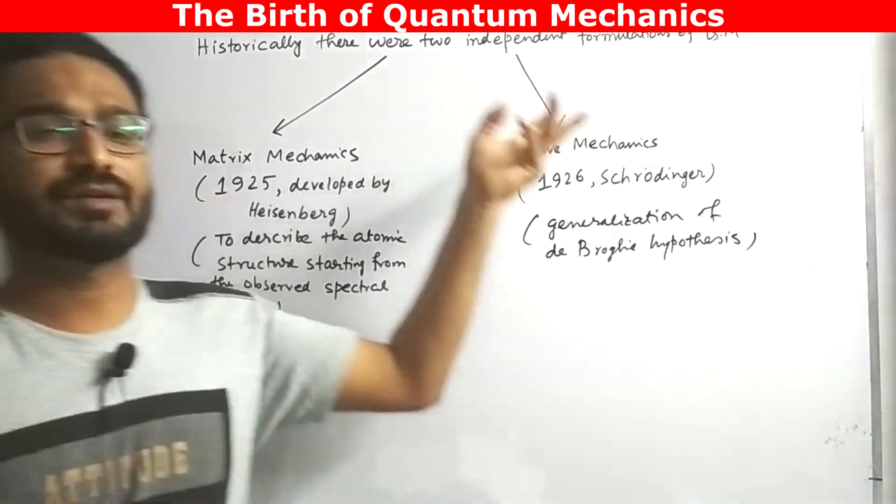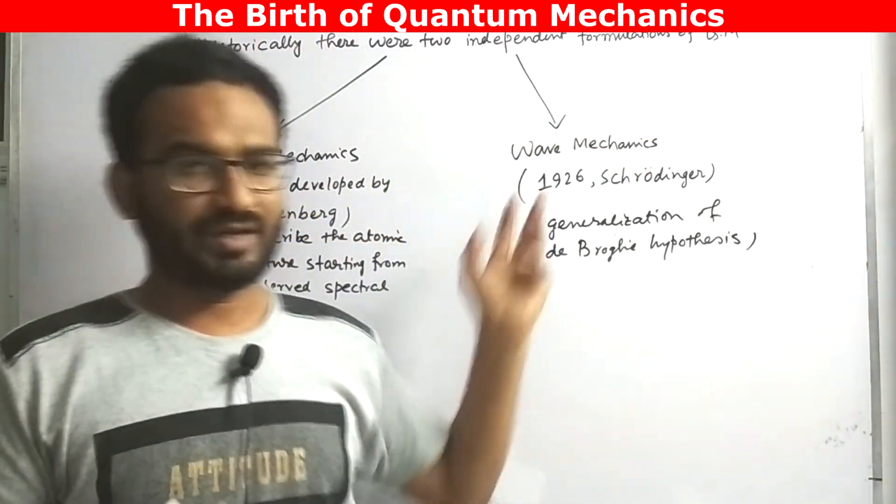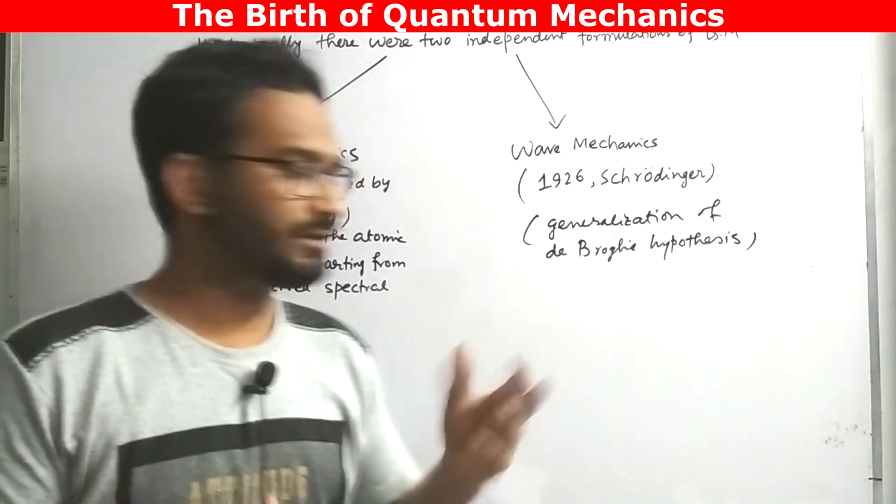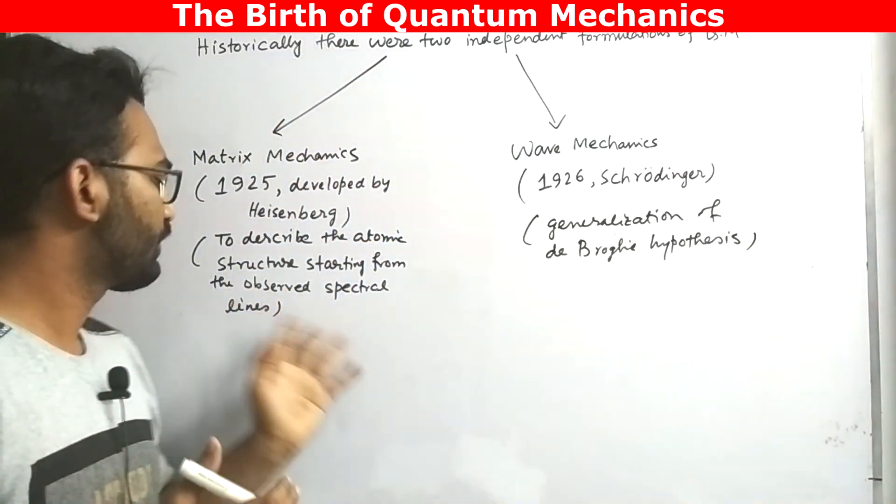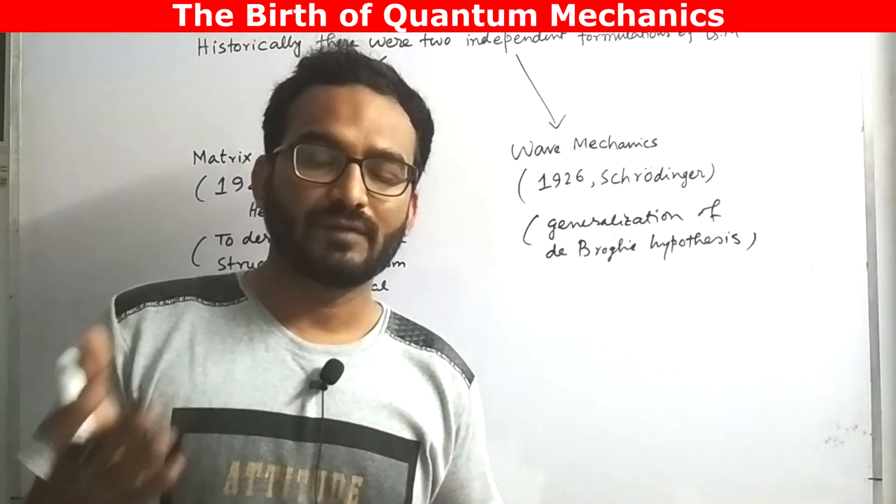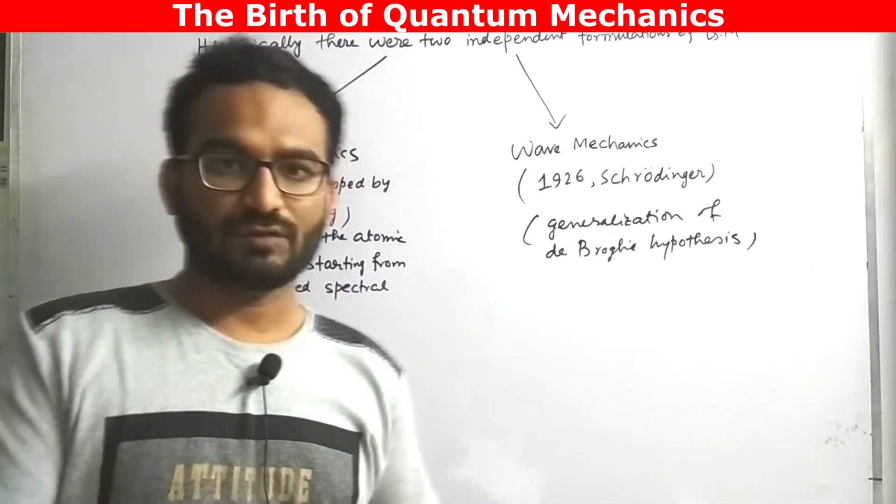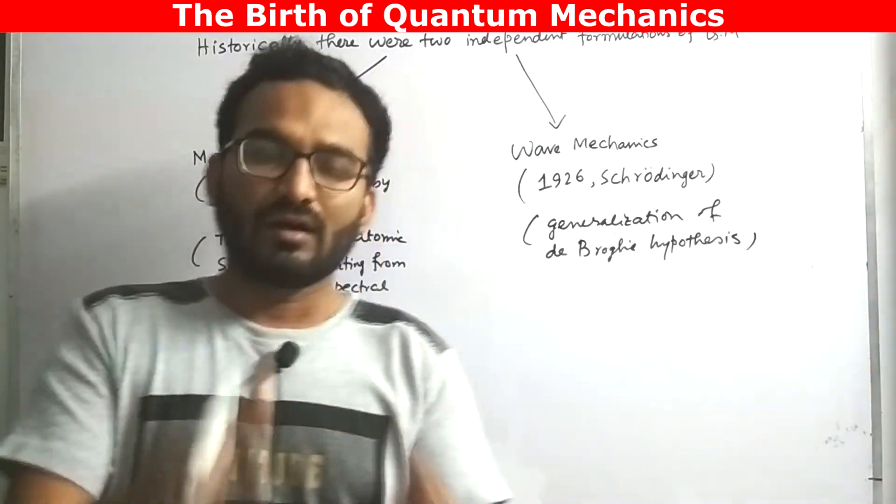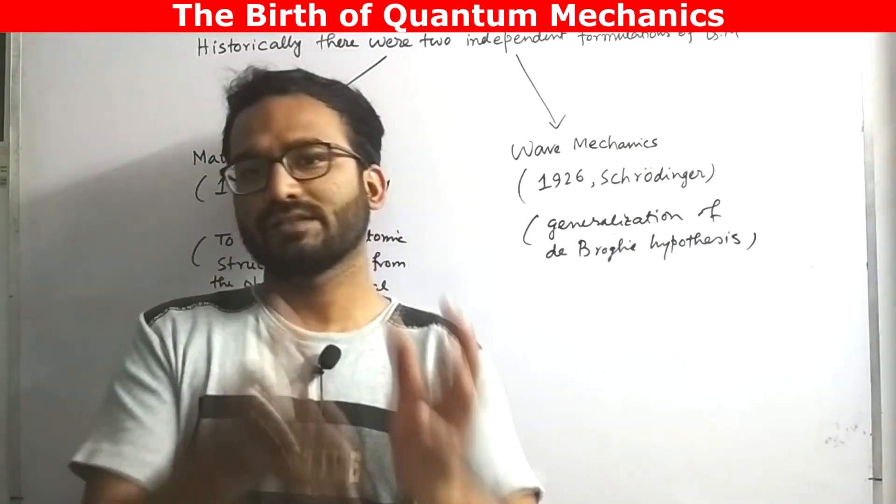Historically there were two independent formulations of quantum mechanics. The first one is matrix mechanics and the second one is wave mechanics. Matrix mechanics was developed by Heisenberg in the year 1925. Heisenberg discovered this method to describe the atomic structure starting from the observed spectral lines. Expressing the physical quantities like energy, position, momentum, angular momenta, etc., in terms of matrices, Heisenberg tried to formulate eigenvalue problems. And from the Hamiltonian formulation, by the diagonalization of the Hamiltonian system, Heisenberg was able to find out the energy spectrum and the state vectors.